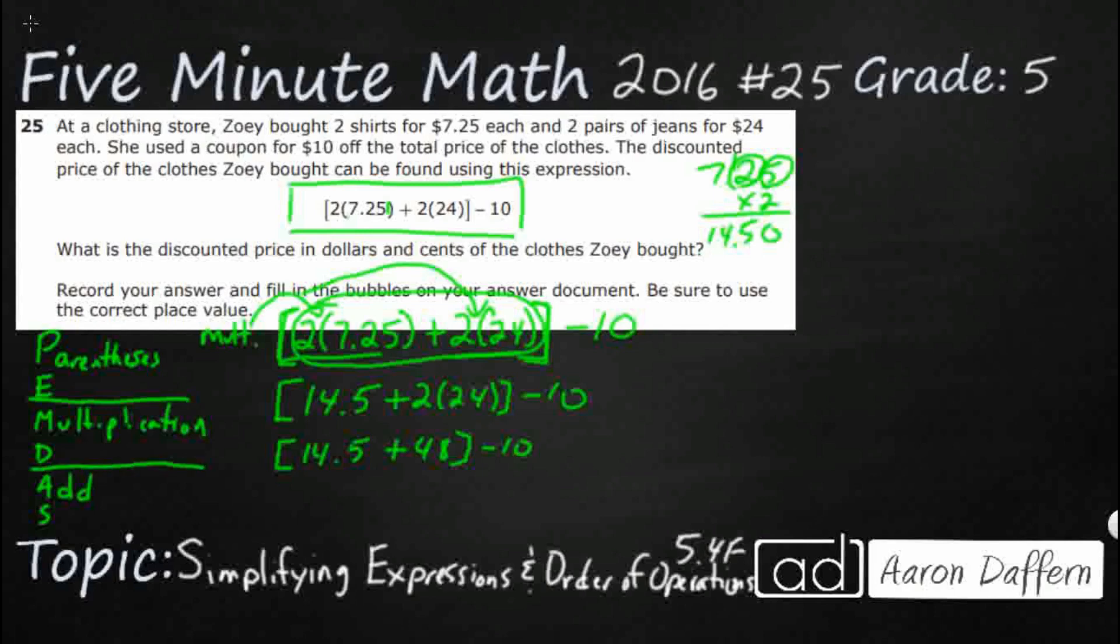Multiplication and division, those are inverse operations. If you see either of those left to right, you can do either of those first. Same with addition and subtraction there. Inverse operations on the same level. Within these brackets, I had to take care of my order of operations. Multiplication, multiplication. I've just got this one addition right here. Let's just go ahead and take care of that.